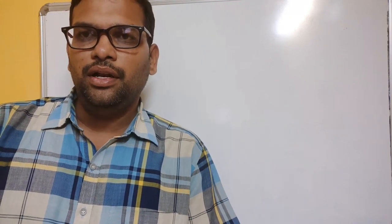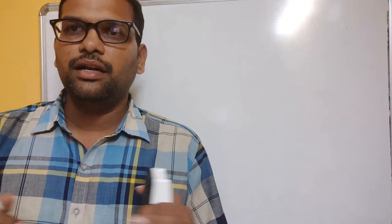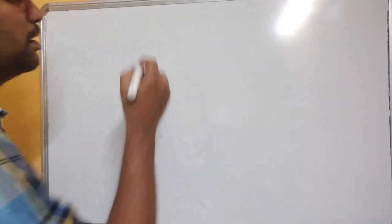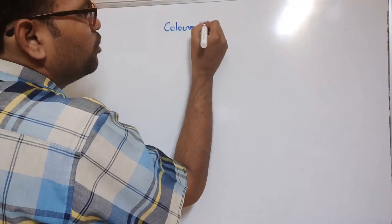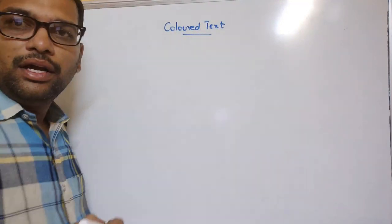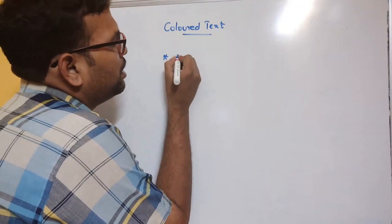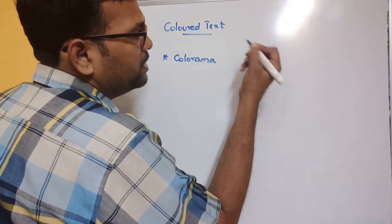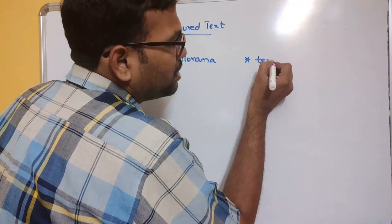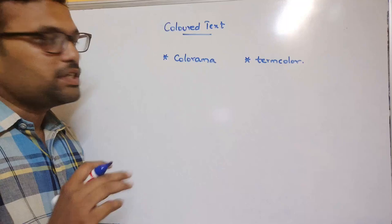Hello friends, welcome back to our channel. In today's session we'll discuss one more concept in Python: how to print text in different colors. This can be done with the help of two modules — one is colorama and another one is termcolor.